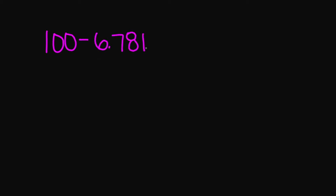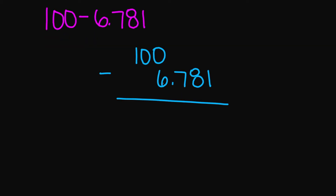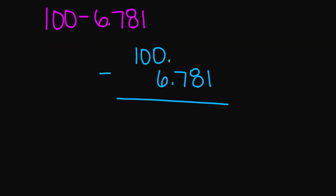Let's try 100 minus 6.781. I'm going to go ahead and set up my subtraction problem and line up my decimal and my numbers. Before I subtract, I'm going to go ahead and add my decimal here and fill in the blank spaces with zeros — these zeros are imaginary.